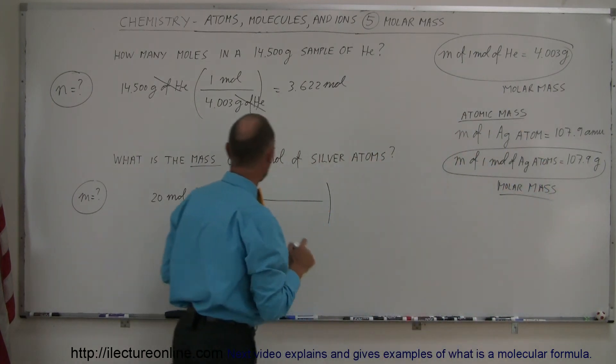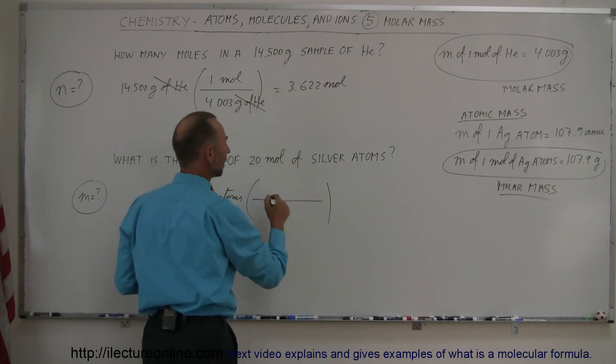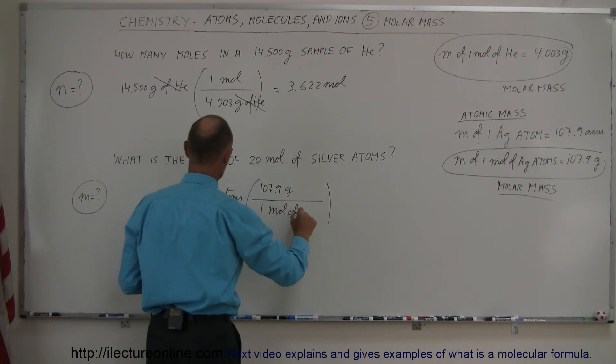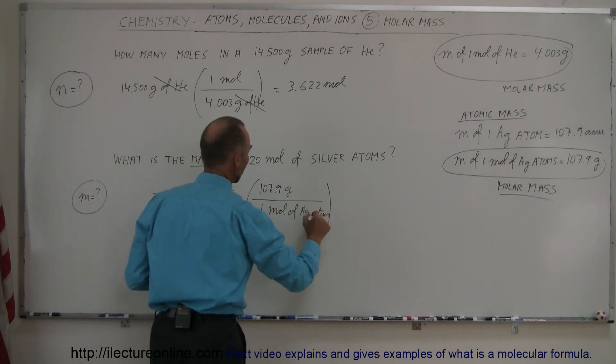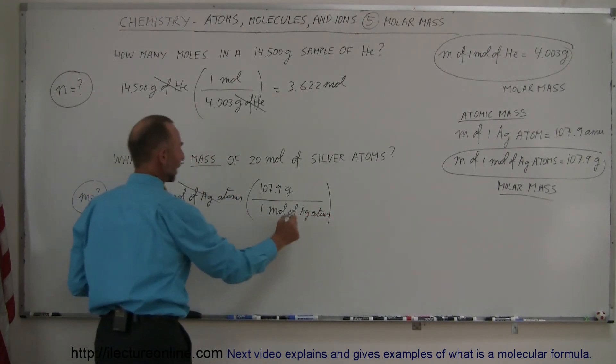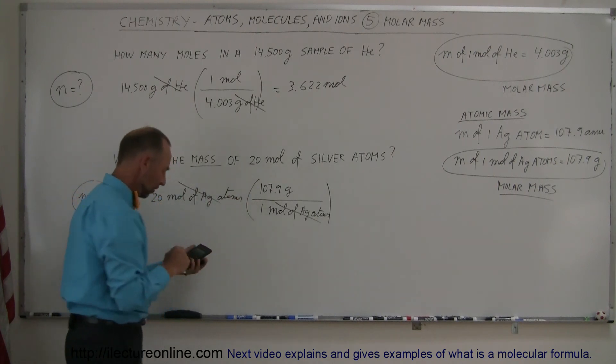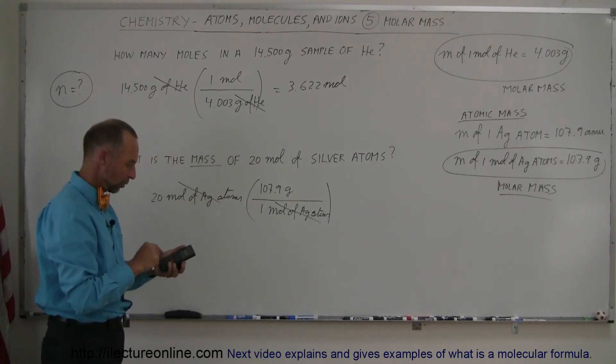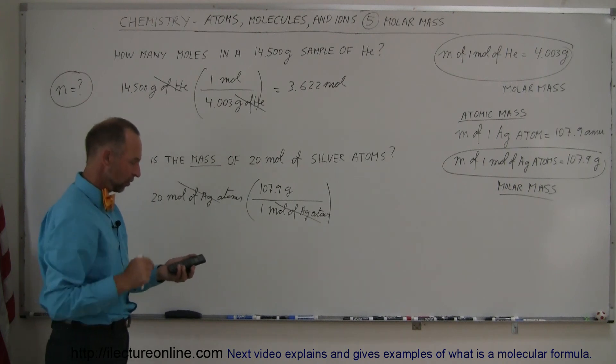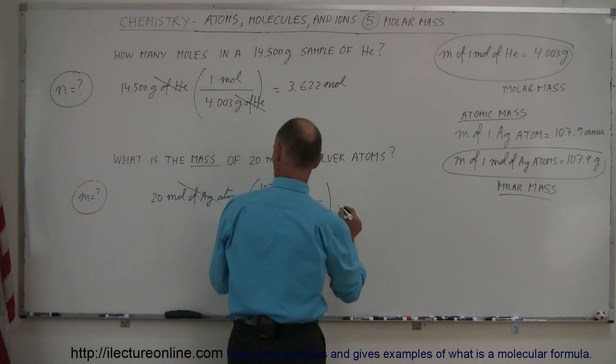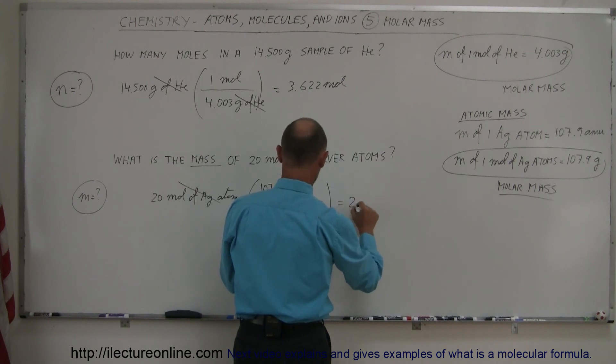So now we have the molar mass, so I'm going to multiply this by 107.9 grams per one mole of silver atoms. Notice the mole of silver atoms cancels out, and I'm left with a multiplication of 20 times this. So 20 times 107.9 equals 2,158 grams.